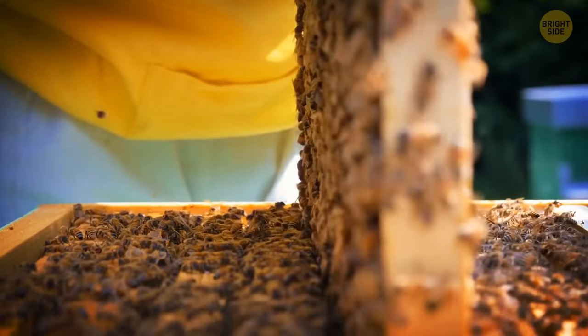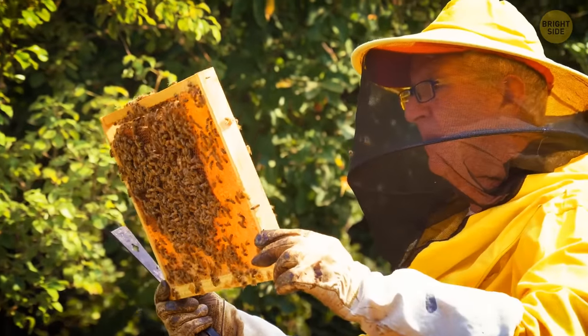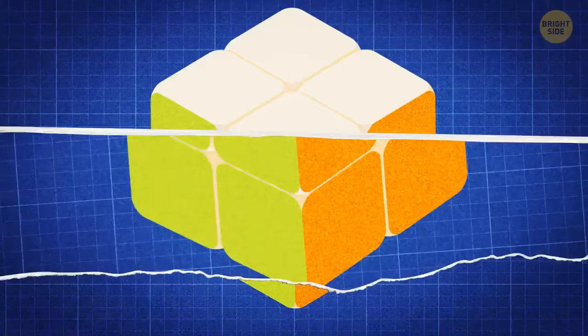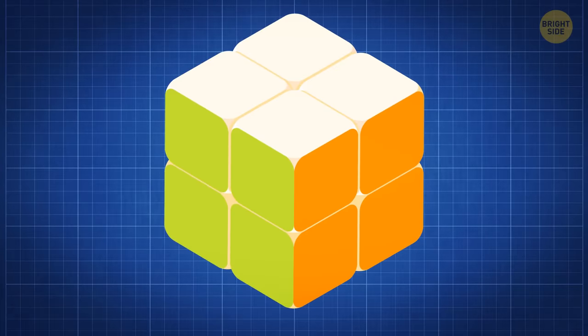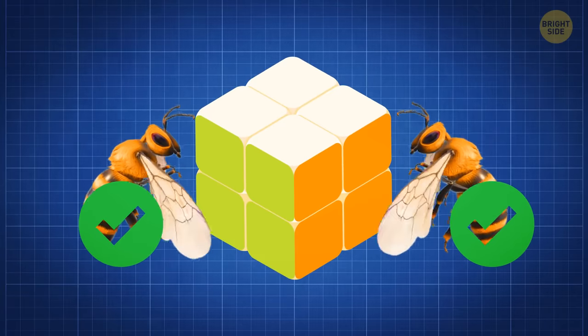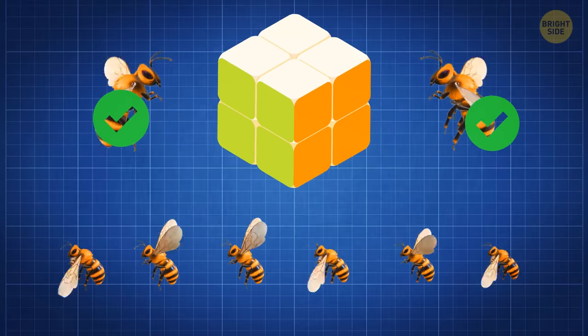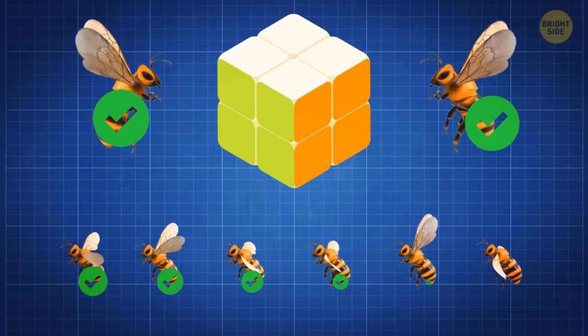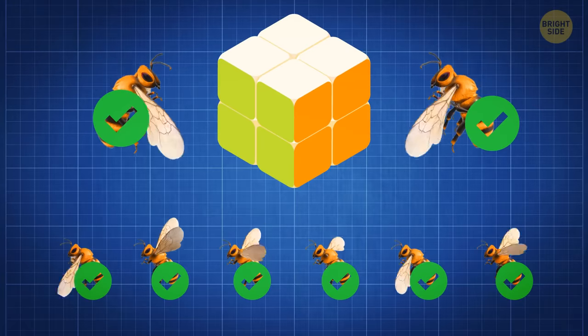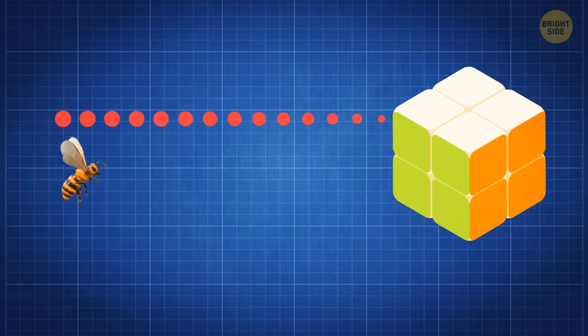Not only can bees learn and remember new things, but they can also teach these things to each other, just like we do. Scientists set up a tricky puzzle box in a lab and trained some bumblebees to solve it. First, expert bees figured the puzzle out. Then, they taught their clueless buddies how to crack it. Turns out, not only humans can pass on knowledge in this way.